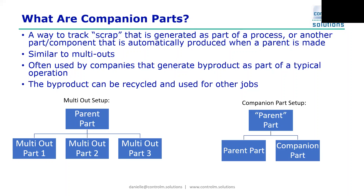So what are companion parts? When we talk about companion parts in PLEX, it's essentially a way for you to track what would be quote-unquote scrap that is generated during the production process, or it's a way to generate a different part or component that is produced when a parent part is made. Companion parts are often used by companies who create a byproduct as part of a typical operation and then recycle that byproduct in the production process — for example, companies who have a plastic or foam regrind management system.